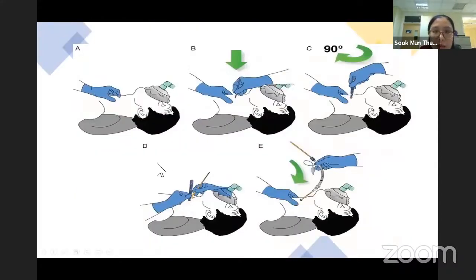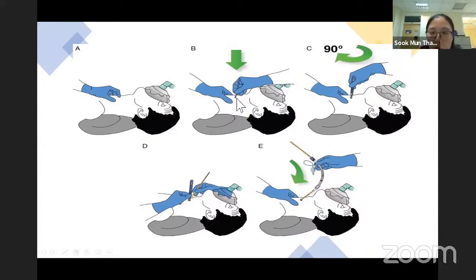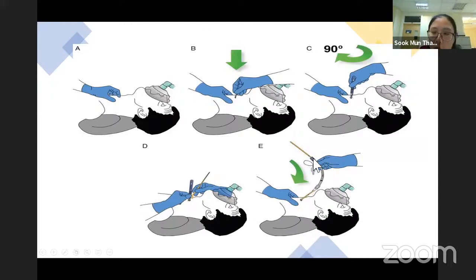This is a picture showing the front-of-neck access. We identify where the cricothyroid membrane is and place the scalpel. Initially a horizontal incision, then 90 degrees and insert the bougie — the bougie goes into the airway. We then railroad our ETT over the bougie. It looks simple, but it is not as simple in an emergency situation.